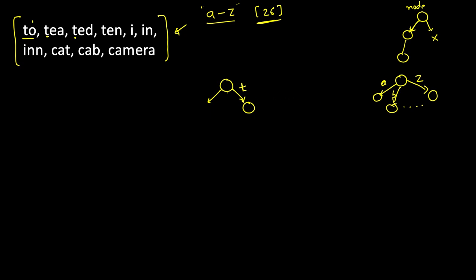So 't' was not present — it was null — so we created a new trie node for 't'. Then next we go to 'o'. We look at 'o', which is the 15th child — it is null — so we create a new trie node for 'o'. Now we have reached the end of the word, so we add an additional flag here to denote this as the end of a word. A normal trie node is somewhere in the middle — it can be end of word for some word but a middle node for some other word.